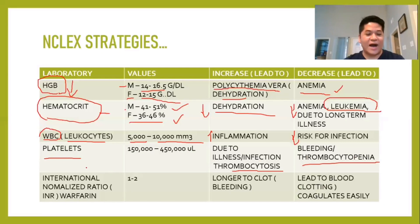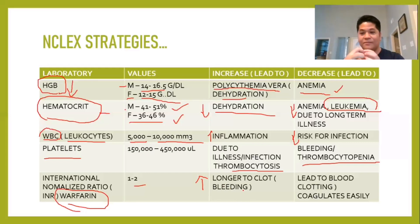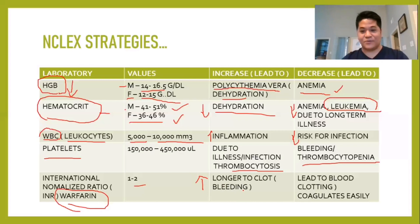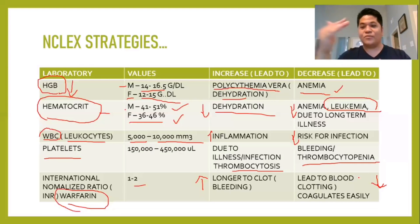Moving on to INR, the International Normalized Ratio. The normal value is 1 to 2, especially for people taking warfarin. If INR increases, you are at risk for bleeding because platelets take longer to clot and seal the wound. If INR decreases, it leads to blood clotting — the blood coagulates easily, which is also dangerous because a clot or thrombus may travel to the brain.